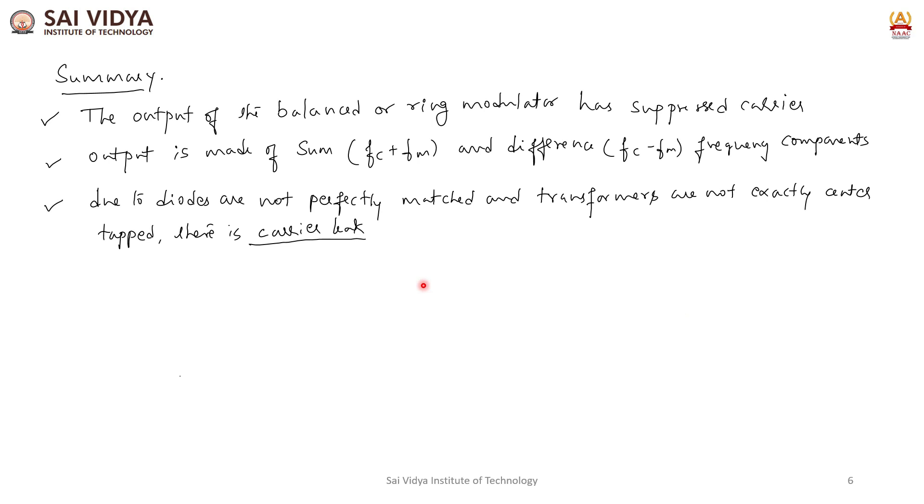To summarize, the output of balanced or ring modulator has suppressed carrier. The output is made of sum and difference frequency components, FC plus FM and FC minus FM, which is upper sideband and lower sideband.